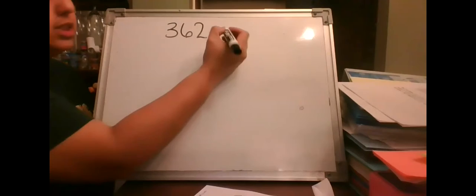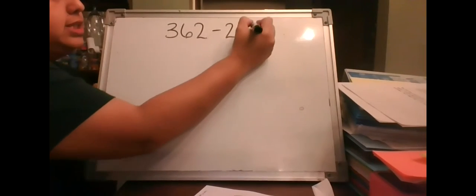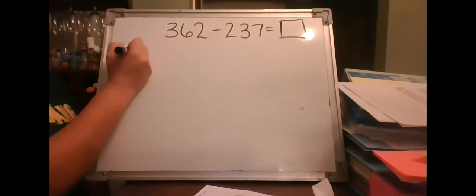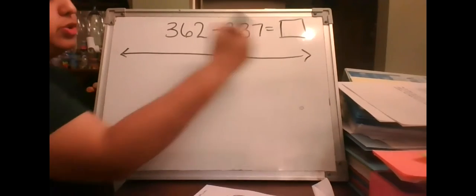Now I want to work with you on a subtraction problem, because you're going to need to know how to do subtraction. This is a review of subtraction. The problem I chose is 362 minus 237 equals my answer.